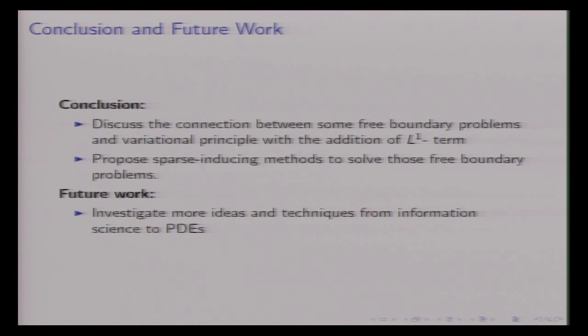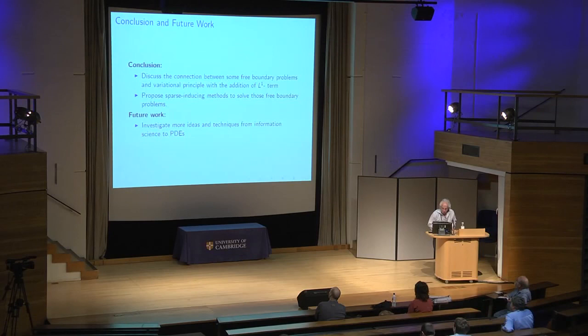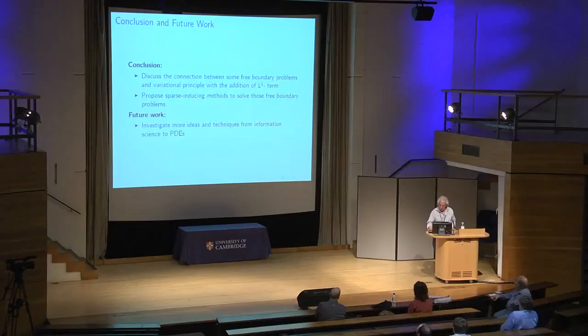What we've done is discuss the connection between free boundary problems and variational principles with an L1 term. The moral of the story is L1 is great — it gives you a convex optimization problem which gives compact support, it puts discontinuities in the right place, and is fast. What we want to do is use more applications, and we're pushing further on the Schrödinger stuff — we're going to do Kohn-Sham and so on. And that's it. Thanks.